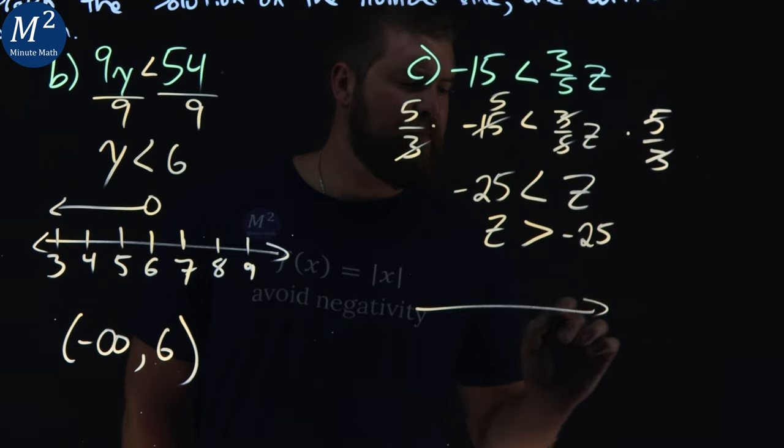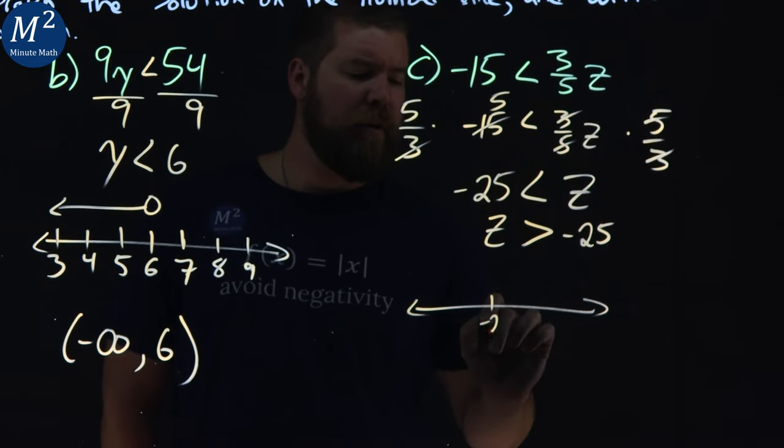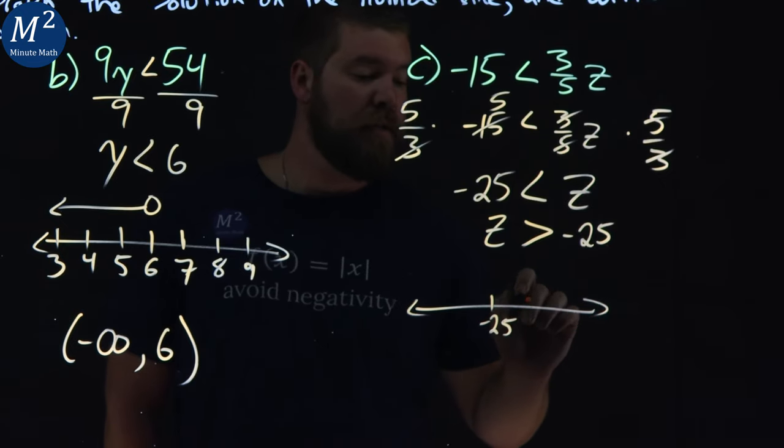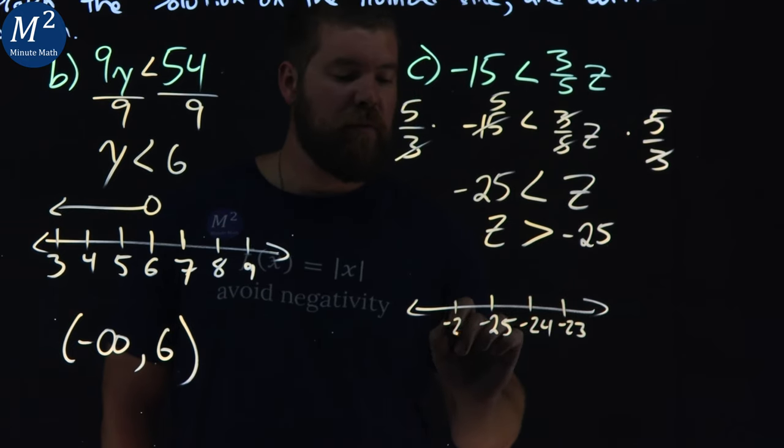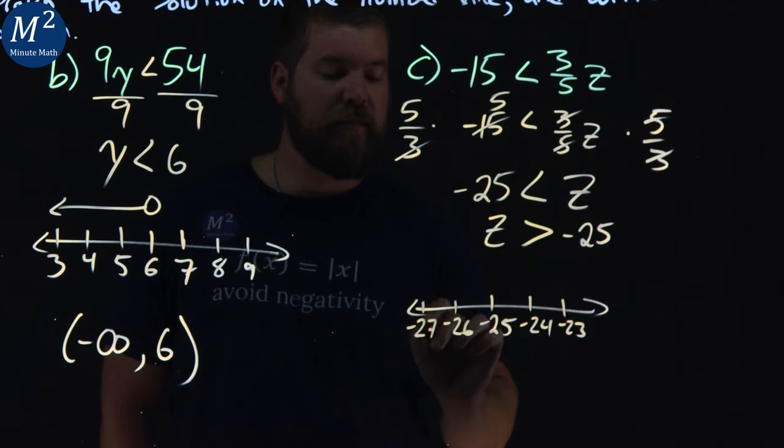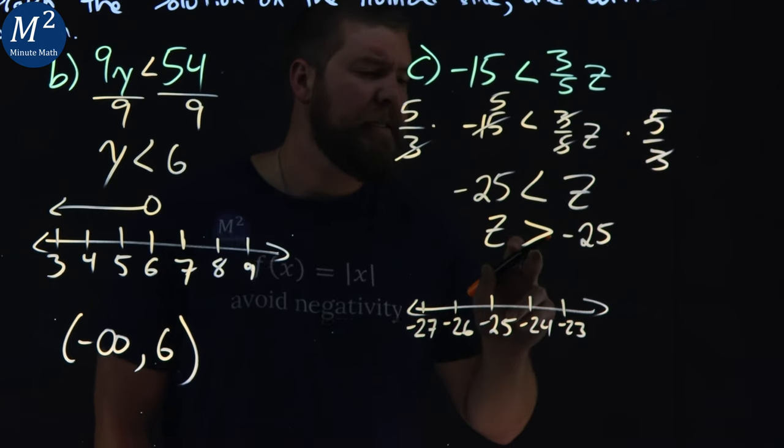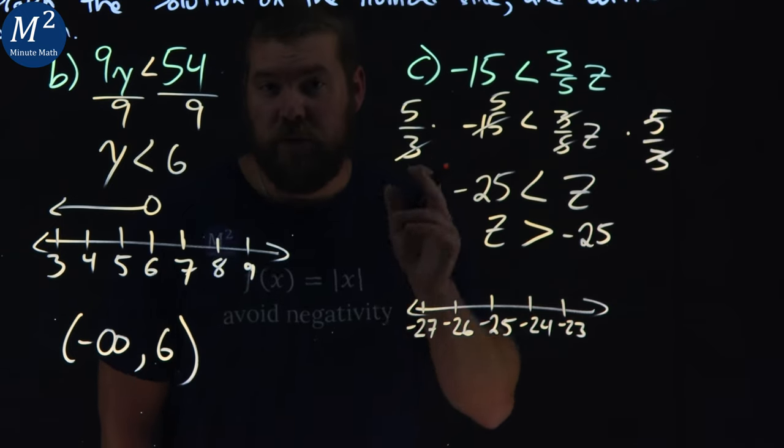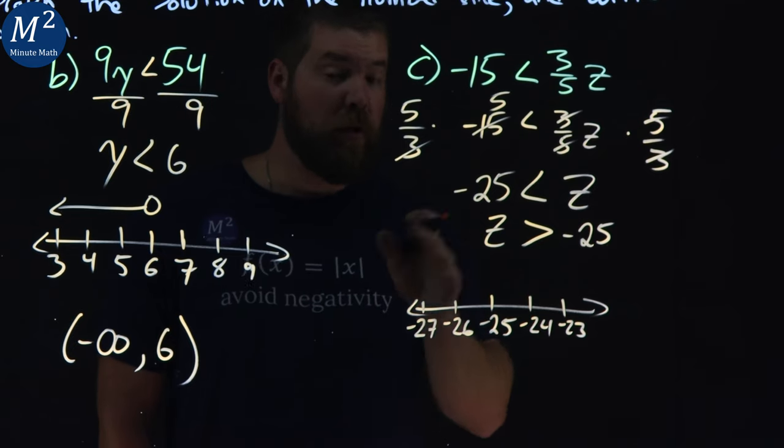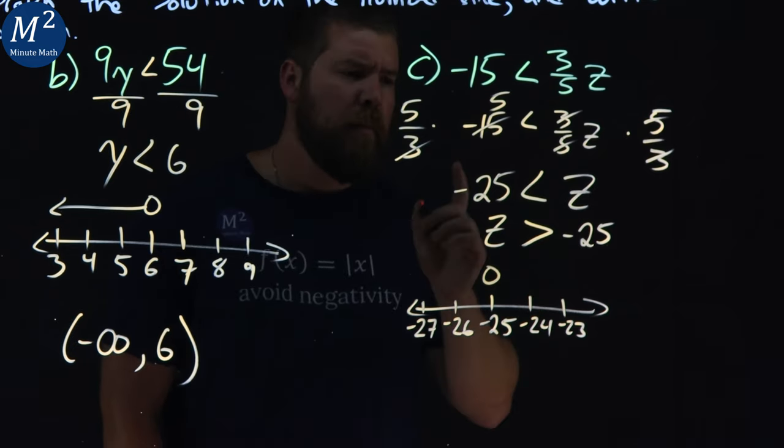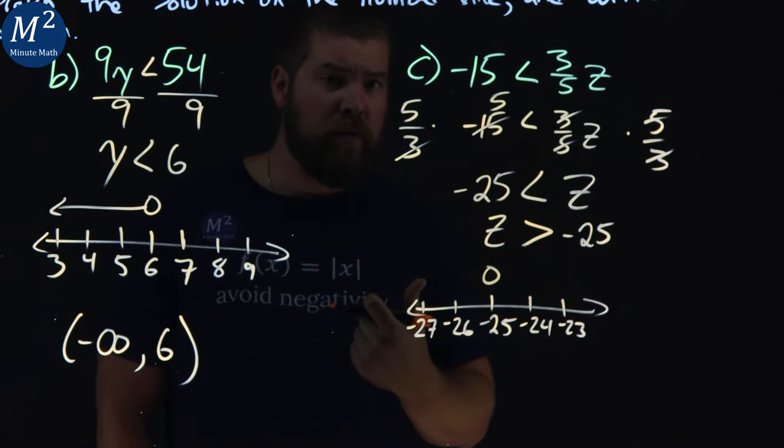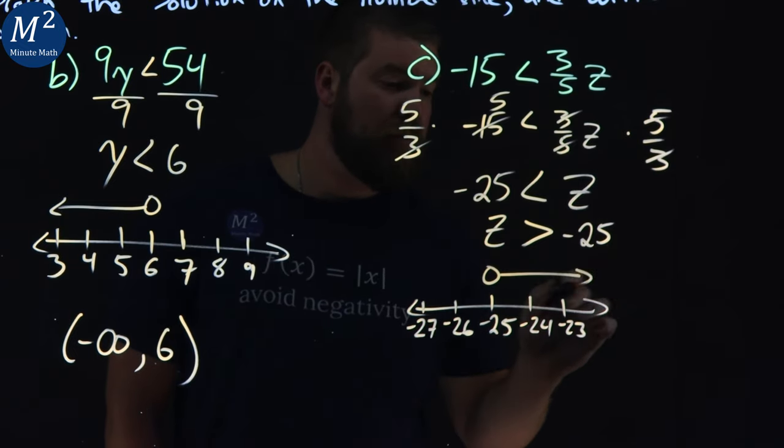So let's write a number line here. Let's just put negative 25 in the middle and let's go on both sides. Negative 24 to the right, negative 23. And then we have negative 26 and negative 27. All right. Z does not equal a negative 25, right? It's only greater than that. So we have an open circle here at negative 25. But z is greater than a negative 25. So we go to the right with our arrow.